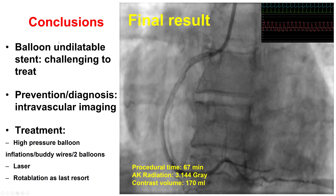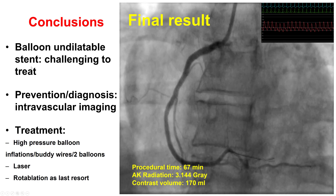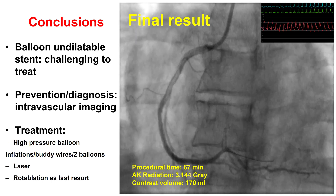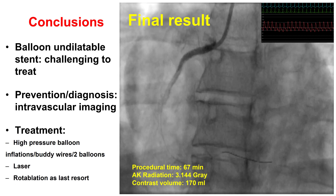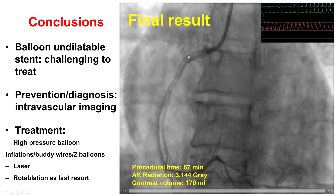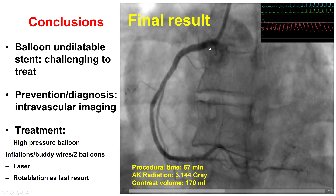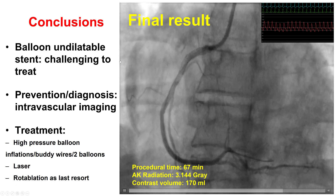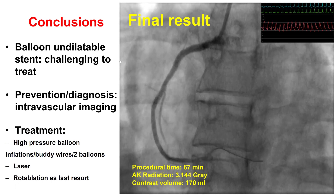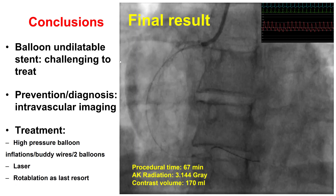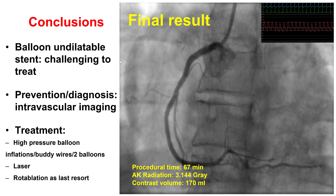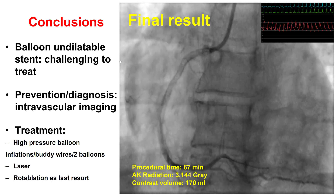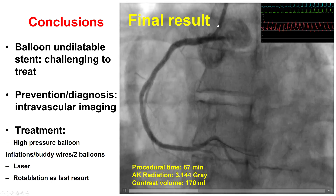Several potential lessons from this case. First, preventing an under-expanded stent is critical because it is much easier to do atherectomy when there is no stent in place than when there is. Also, previous radiation therapy may be a factor to consider when treating a lesion, as those lesions may be very hard to dilate. Therefore, doing intravascular imaging after balloon angioplasty is advisable, and potentially using atherectomy more often as an upfront strategy may be the way to go.